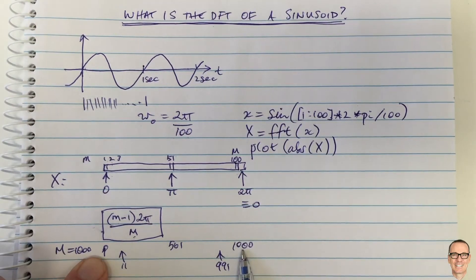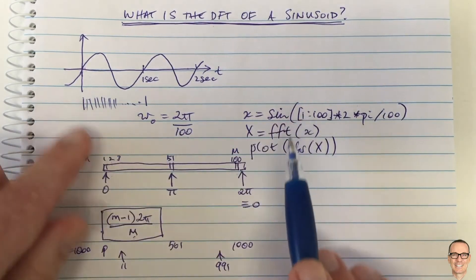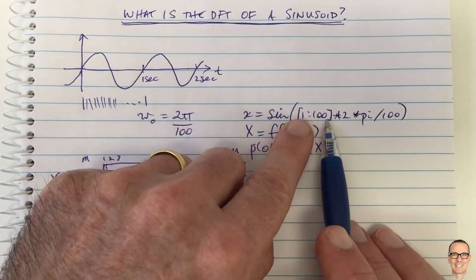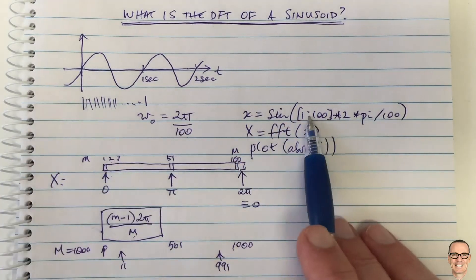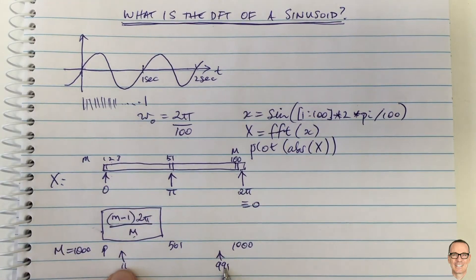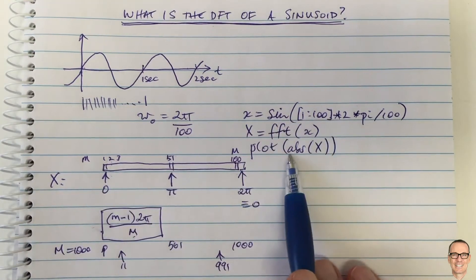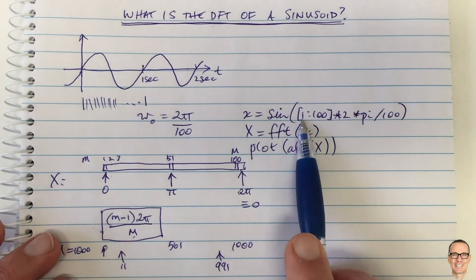If we sampled from a different time offset — say indices 2 to 101 instead of 1 to 100 — the spikes still appear at the same element positions. The difference is only a phase offset, which would be visible if we plotted the phase rather than the absolute value.